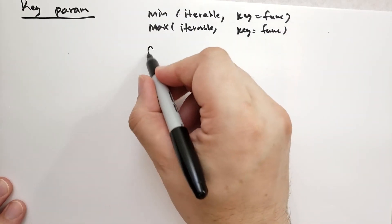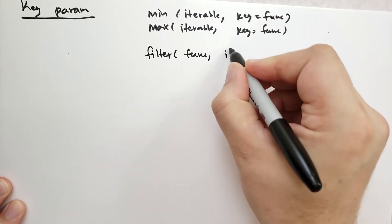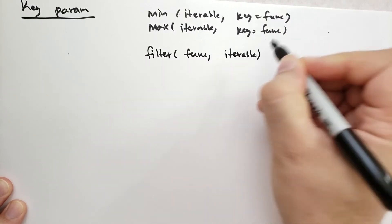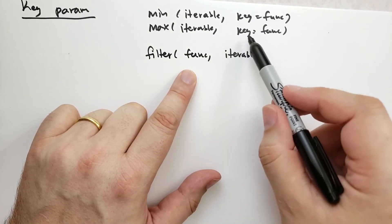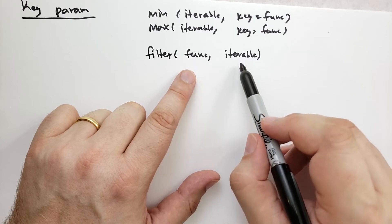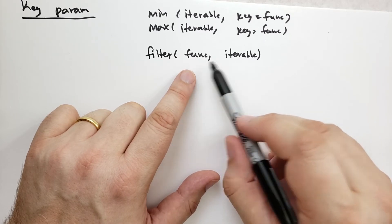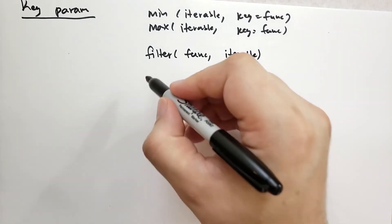There's also filter. This takes a function and an iterable. You can think of this function kind of as a key parameter like in sorted or in min max. The function is applied to each item in the iterable, and if the function returns a true value, then that item is kept. Otherwise, it's thrown away.